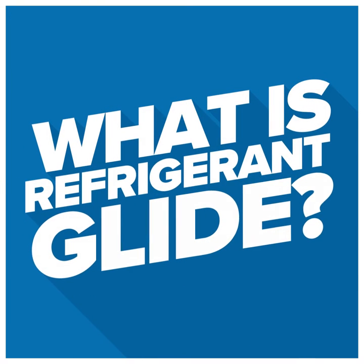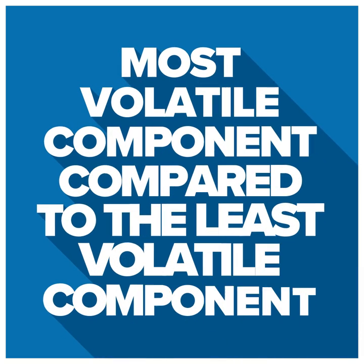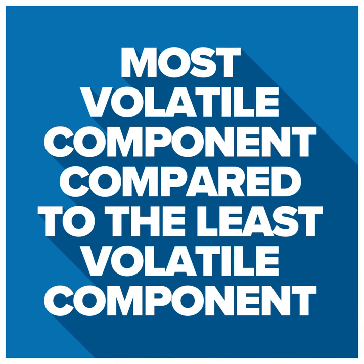But you may ask, what is a refrigerant glide? Glide is the difference between the boiling point of the most volatile component compared to the least volatile component within the refrigerant blend.